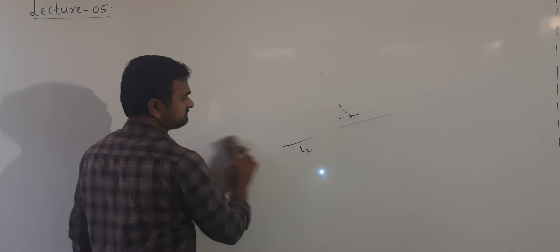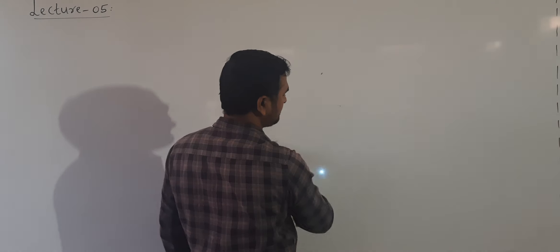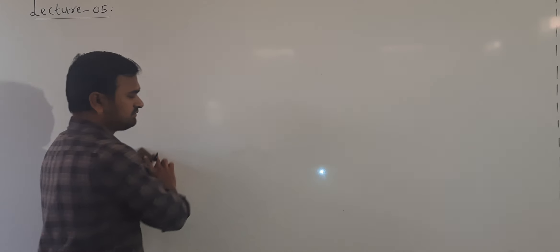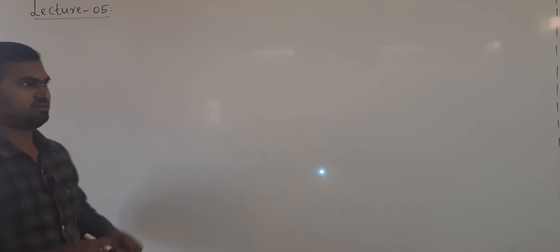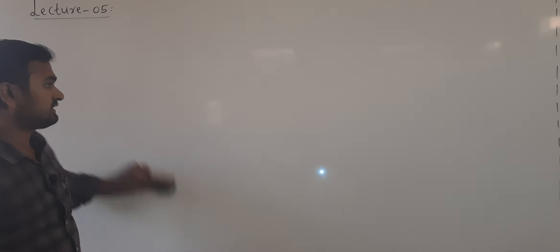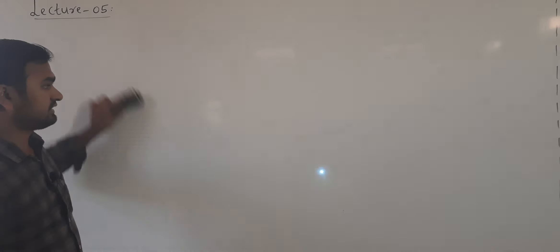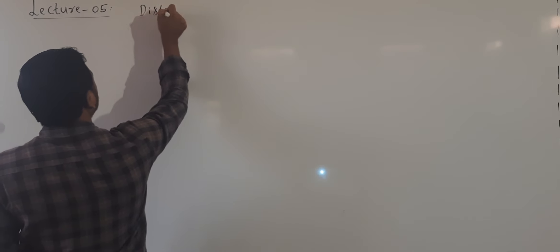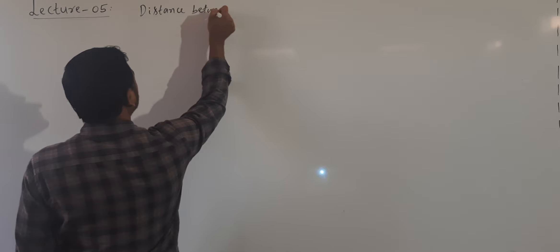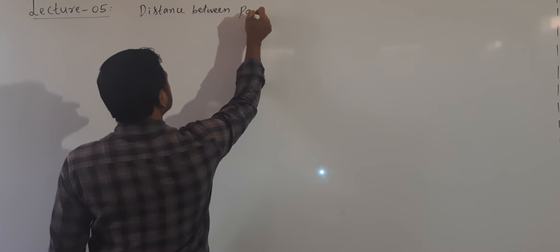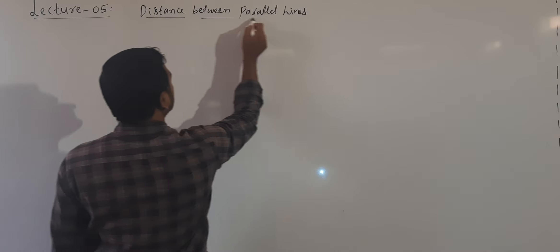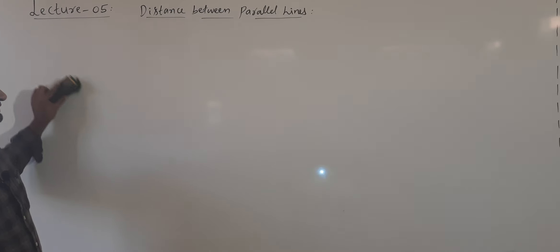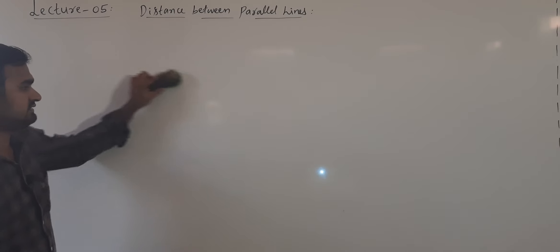So now we will study how to find the distance between parallel lines in space. In 2D we studied the distance between two parallel lines as |C1 - C2| divided by √(A² + B²), but the same type of formula is not used in 3D. Just observe how we are getting the distance here.